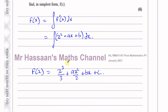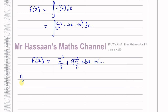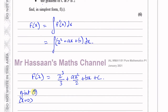Integrating gives f(x) = x cubed over 3 plus ax squared over 2 plus bx plus c. We need to find the values of a, b, and c. We know the y-intercept is minus 8, meaning when x equals 0, y equals minus 8. Putting 0 into the equation gives 0 + 0 + 0 + c, so c equals minus 8. The constant term in a function is always the y-intercept.